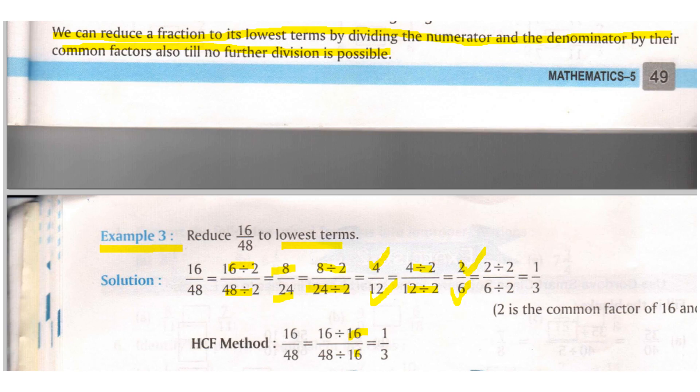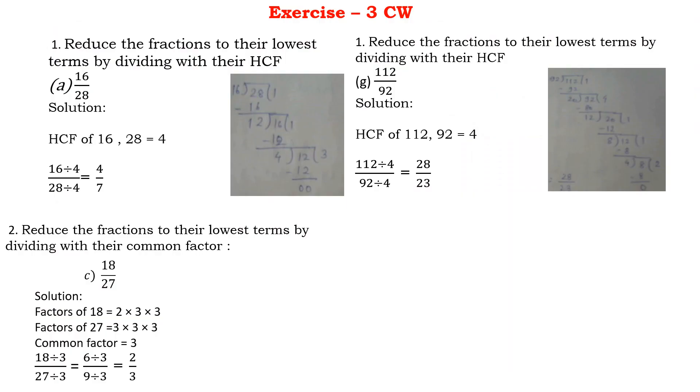So if it is asked to reduce any number to lowest form you can follow any method. You can find HCF by any method or you can keep on dividing both the numerator and denominators with the same till you stop.